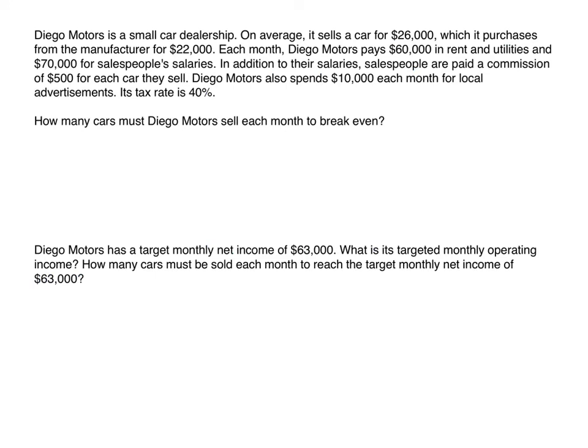Now let's look at Diego Motors, a small car dealership. On average they sell a car for $26,000, which they purchase from the manufacturer for $22,000. Each month Diego Motors pays $60,000 in rent and utilities, $70,000 for salesperson salaries, a commission of $500 per car sold, and $10,000 for local advertisements. Their tax rate is 40%. How many cars must they sell each month to break even?